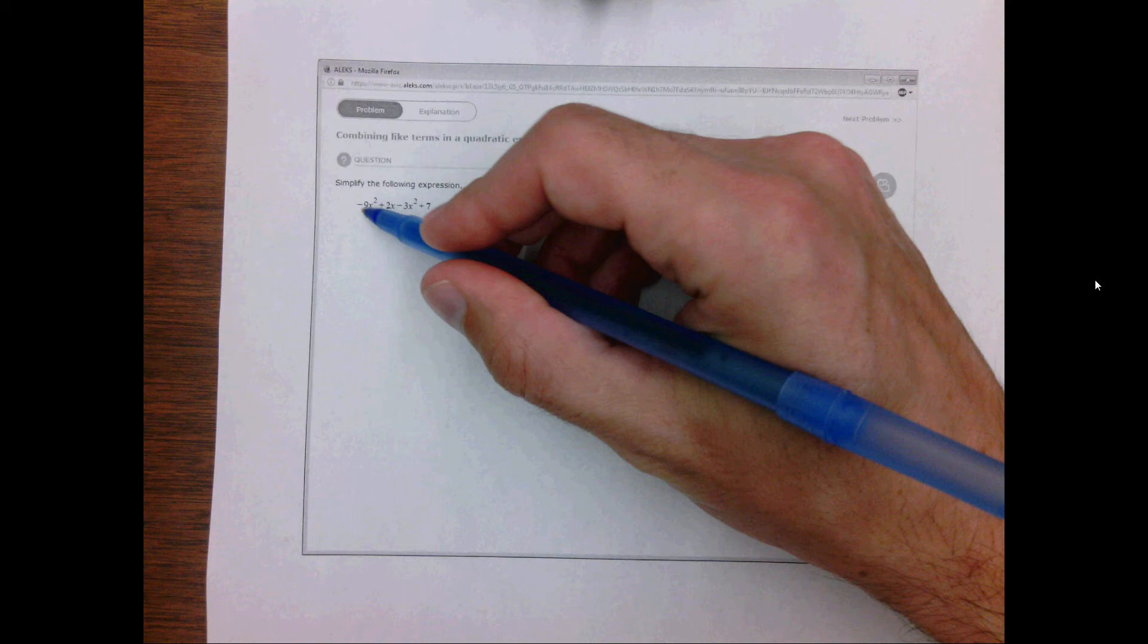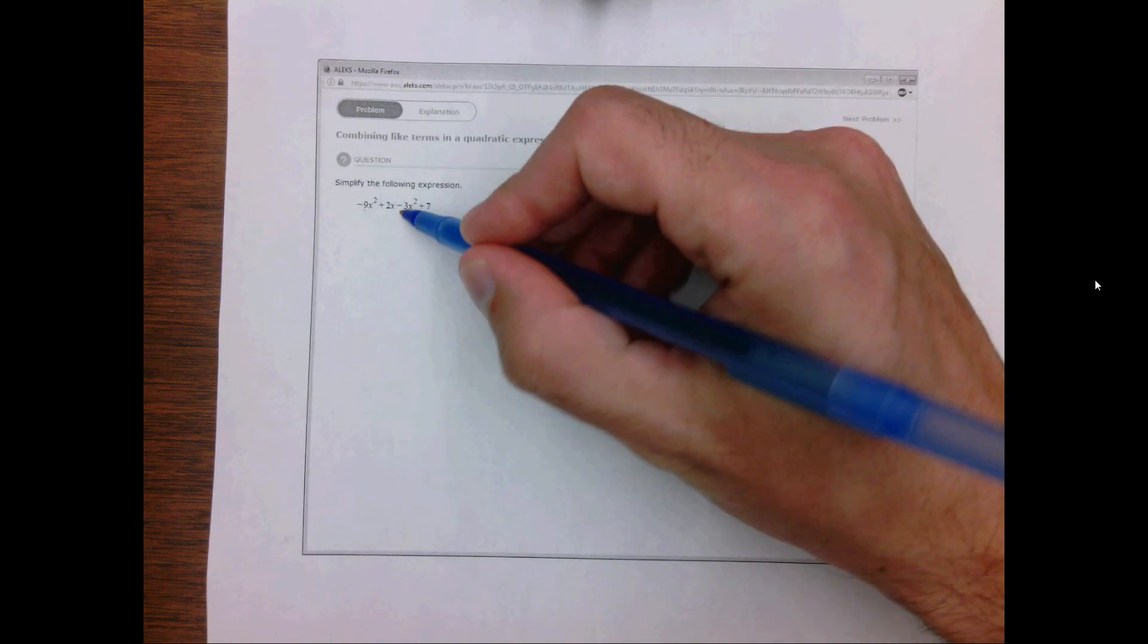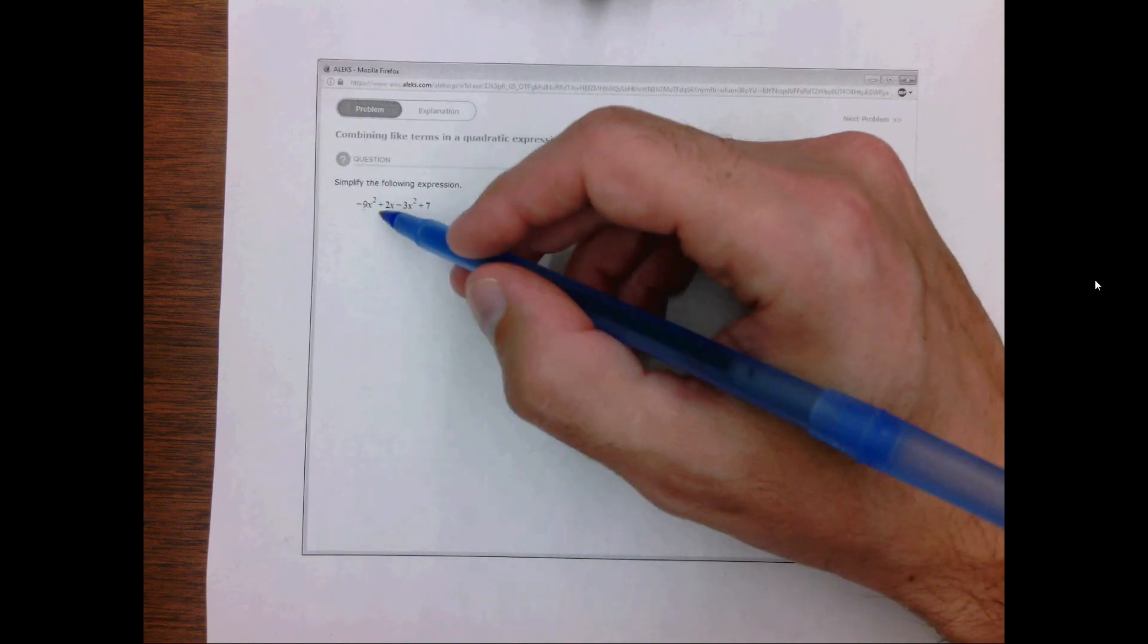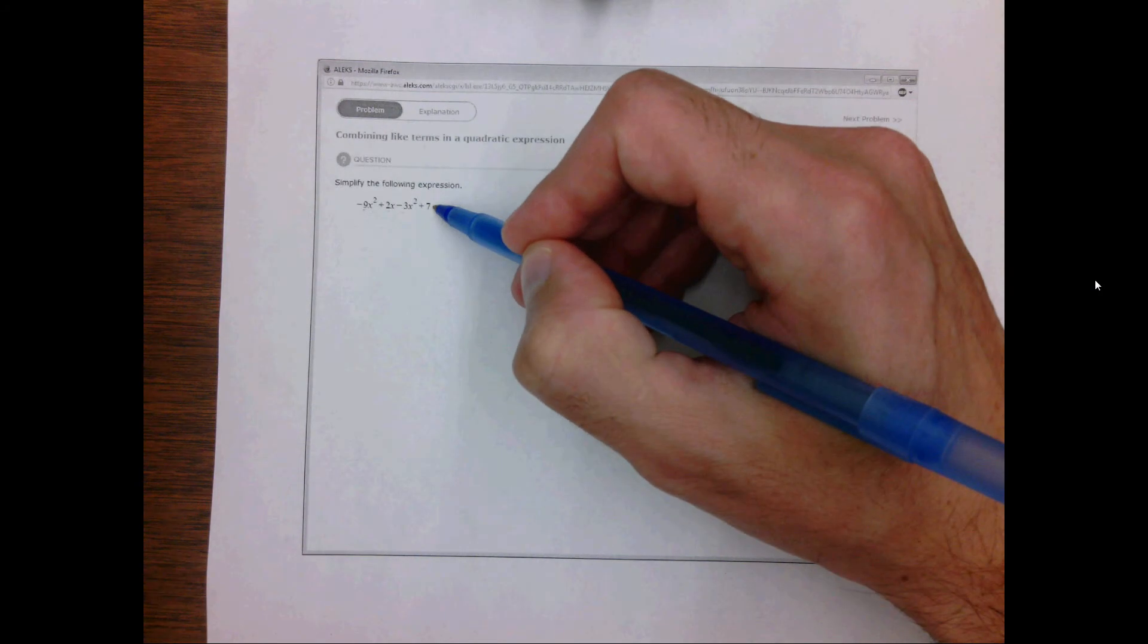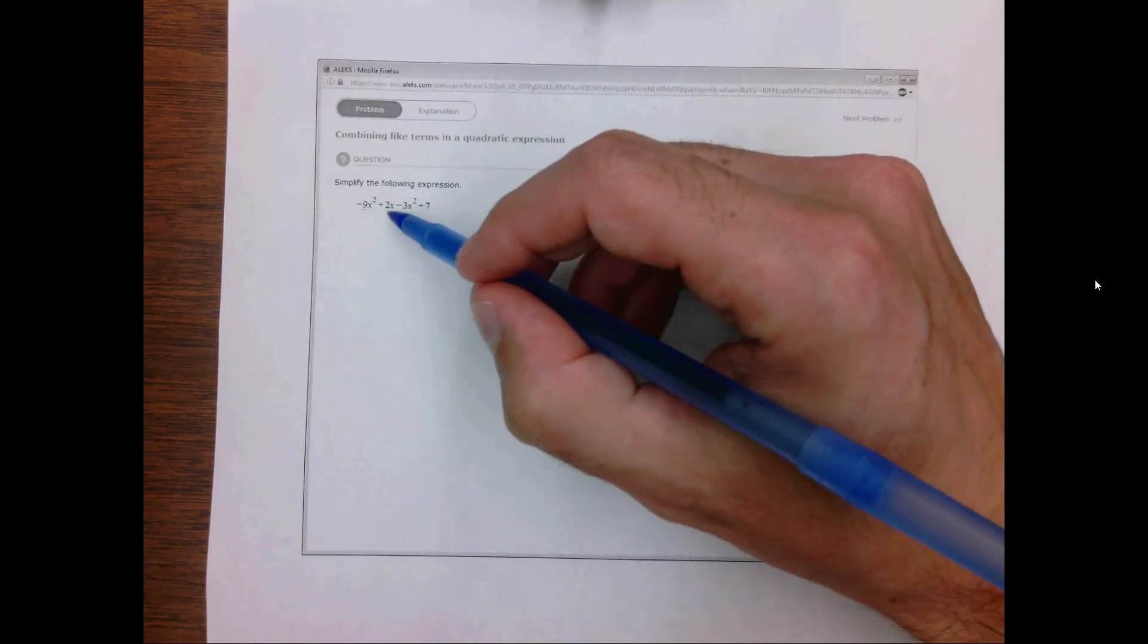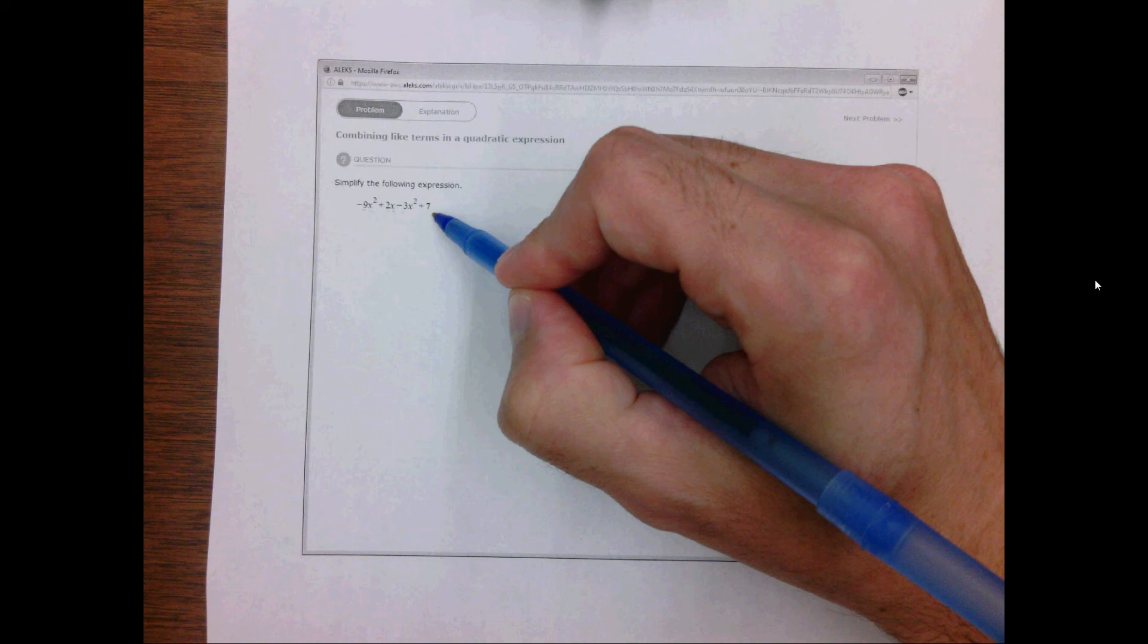So in this case we have minus 9x squared which is like minus 3x squared, but it's not like 2x or 7. We can combine the x squared terms but we can't combine the x term or the 7 with no variable.